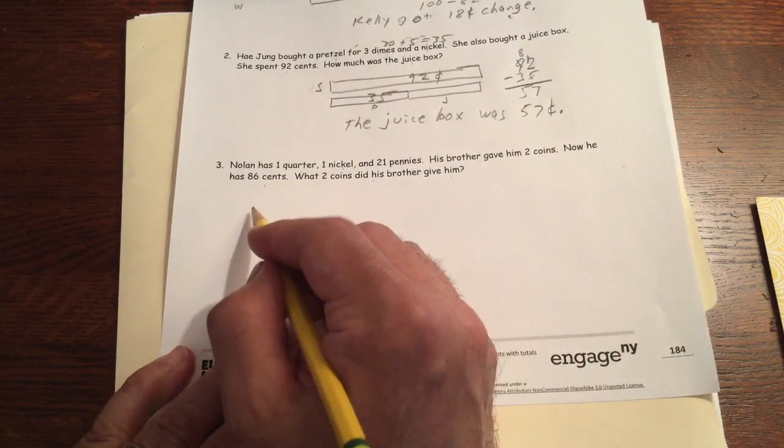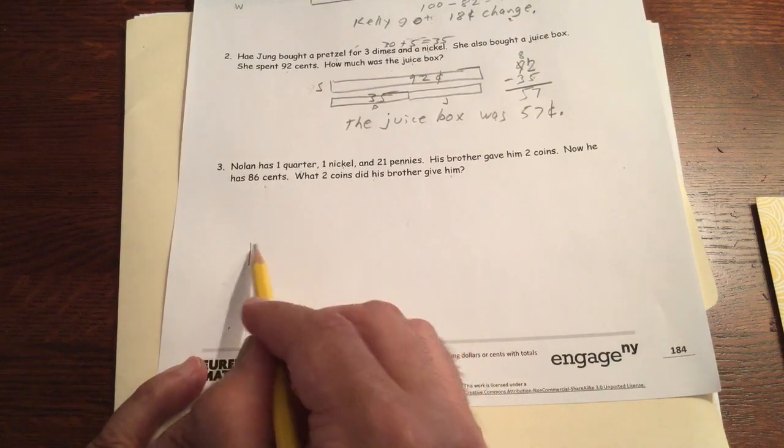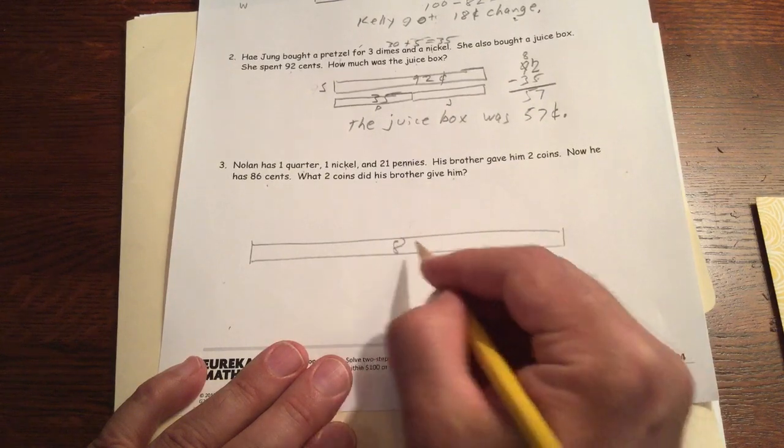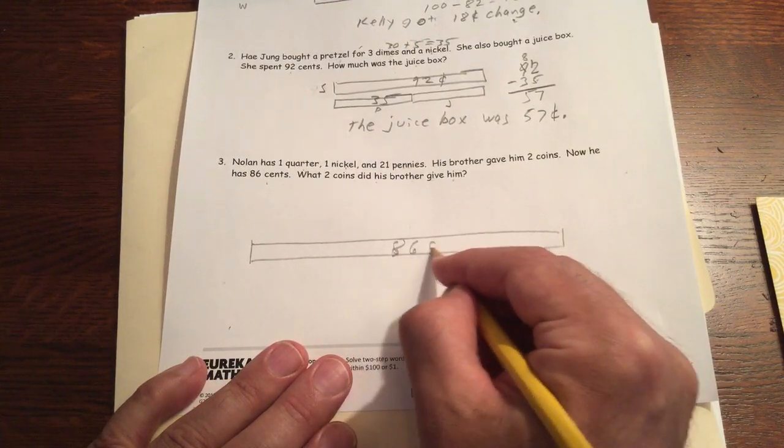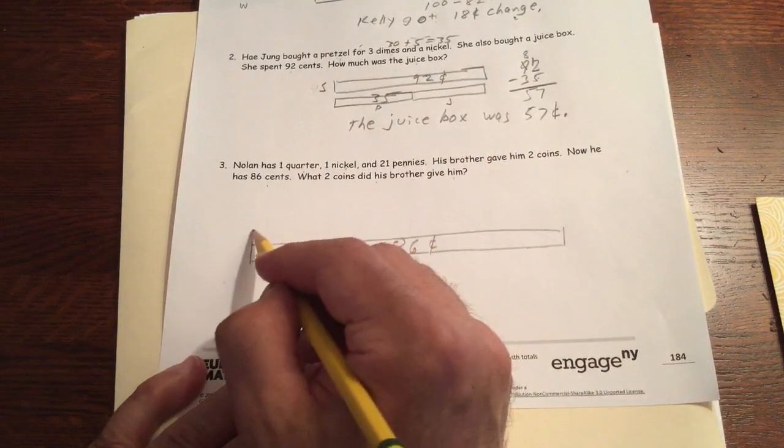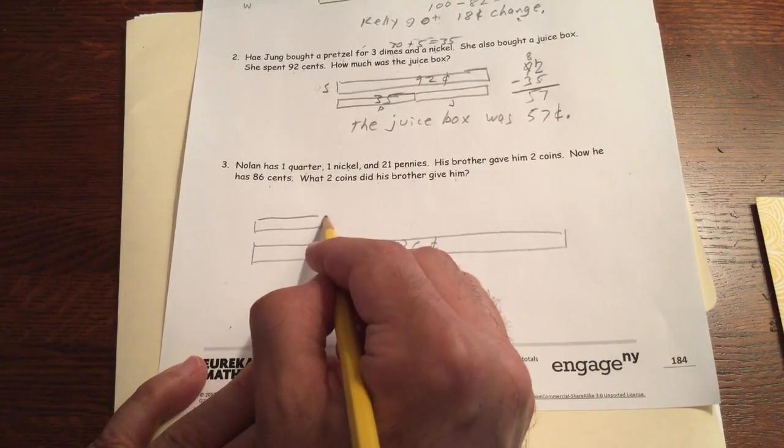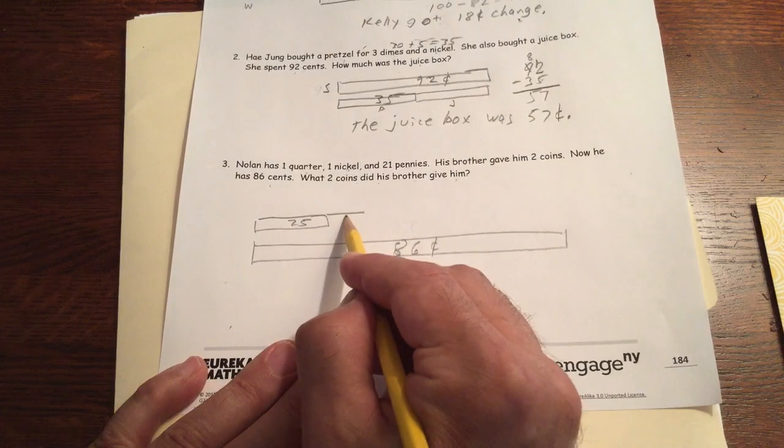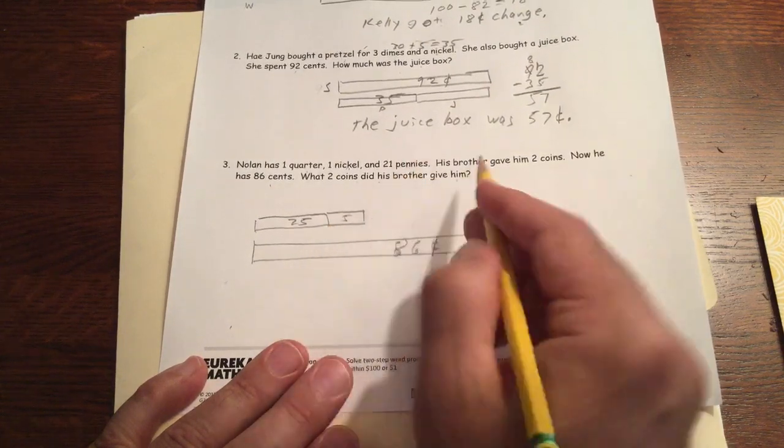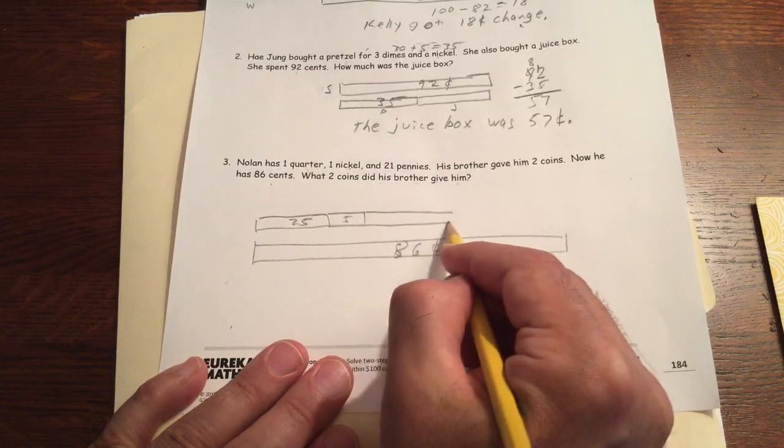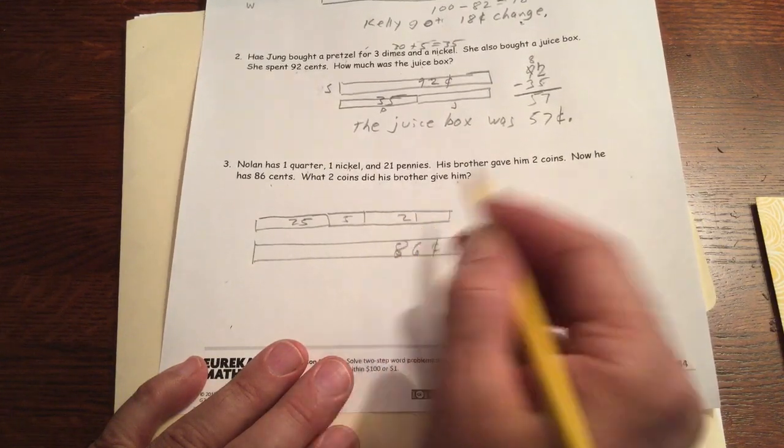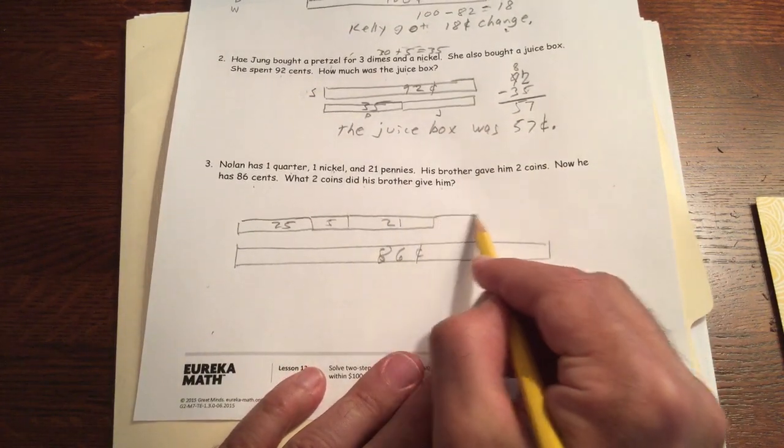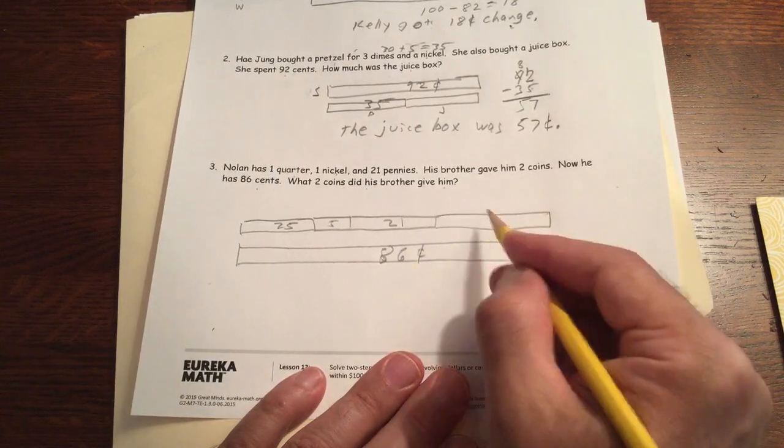So we could do a big tape diagram for this. Now the whole thing is going to come out to 86 cents. I'm going to make a really big piece of tape here, 86 cents. And the quarter is 25, and the nickel is 5, and the nickel is 5. 21 pennies is 21 cents, right? And his brother gave him two coins. The two coins are going to add up to this much.